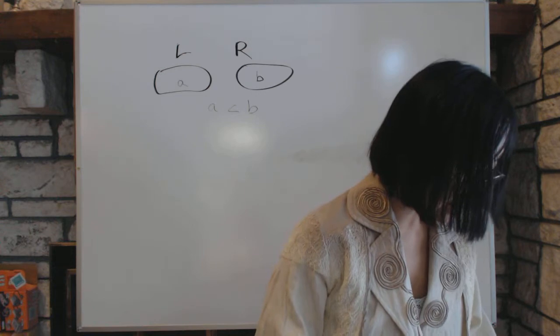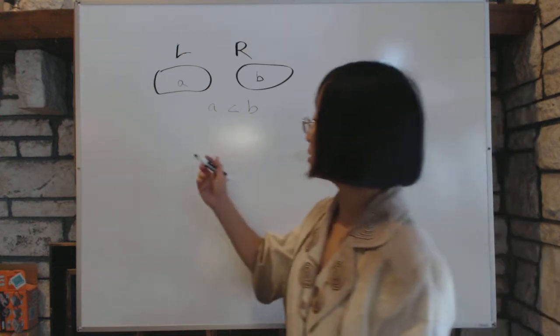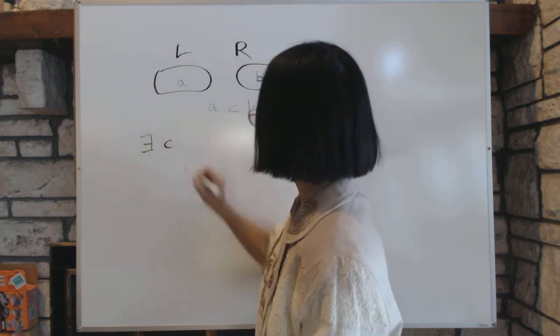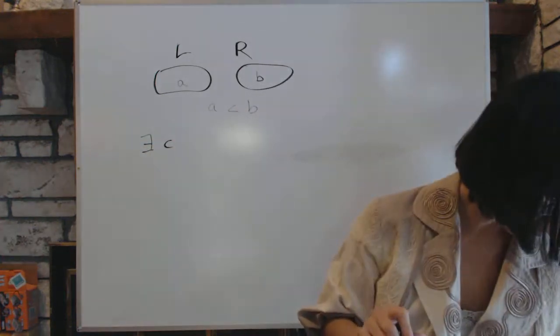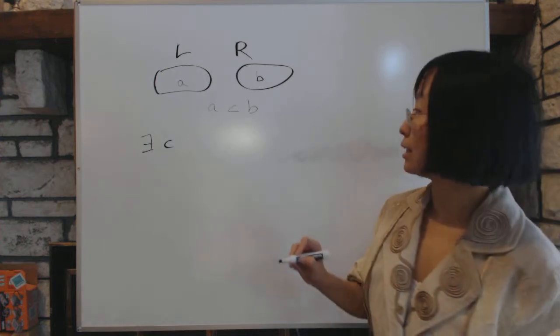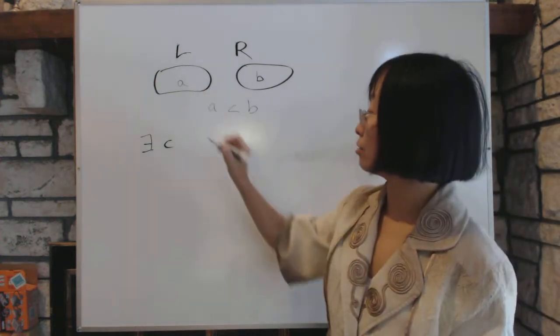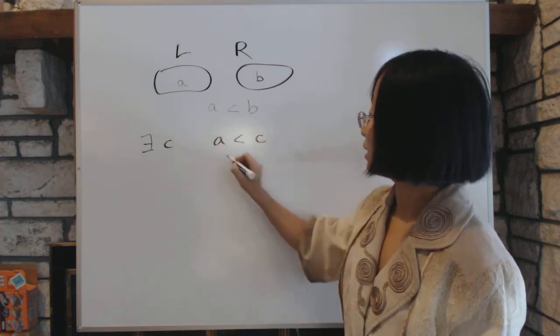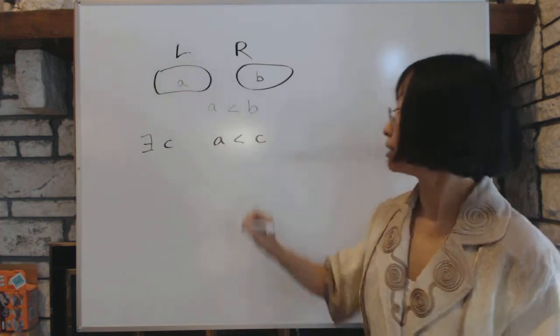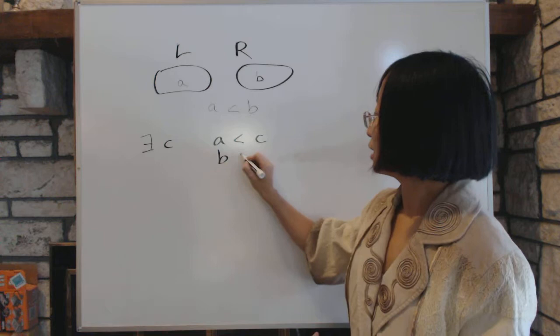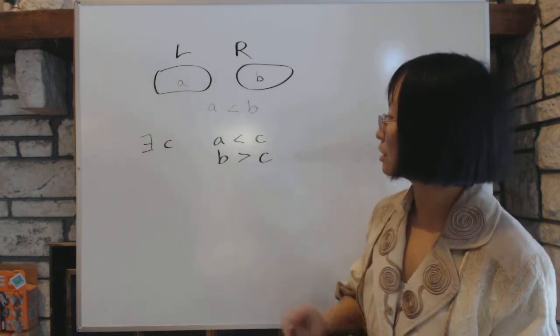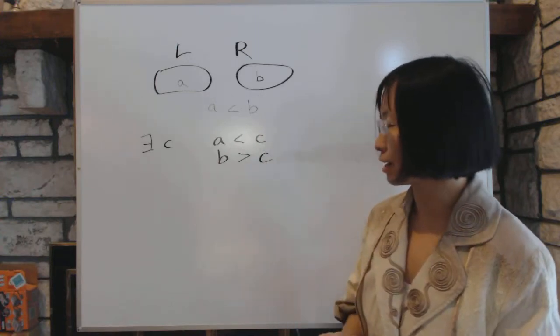And then there exists a number C such that all numbers that are less than C are in L, such that A will be less than C. And then similarly, all numbers bigger than C will be in R. That's the condition. Everything that's less than was here and bigger than is there.